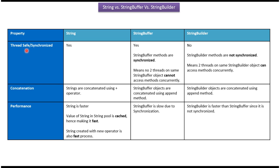Property is thread safe or synchronized. String is thread safe and it is synchronized. String buffer methods are synchronized, meaning two or more threads cannot access string buffer methods simultaneously. String builder is not thread safe and it is not synchronized, meaning two or more threads can access string builder methods simultaneously.